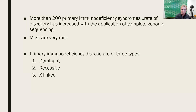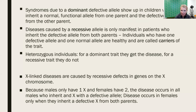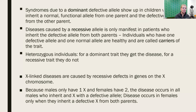If you've taken genetics, you know what these inheritance patterns look like. When we're talking about a dominant inheritance pattern, that means one allele from mom or one allele from dad is going to mask the other one if it is recessive. Syndromes that are due to dominant defective alleles will show up in children who have any one of those alleles — even if they get one functional allele from a parent, they're still going to have the dysfunctional one from the other parent.